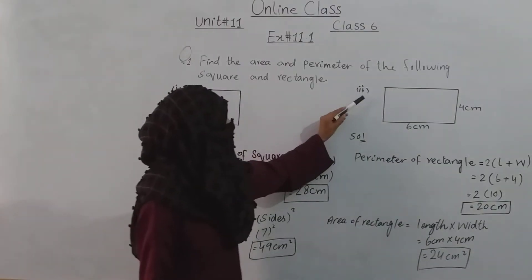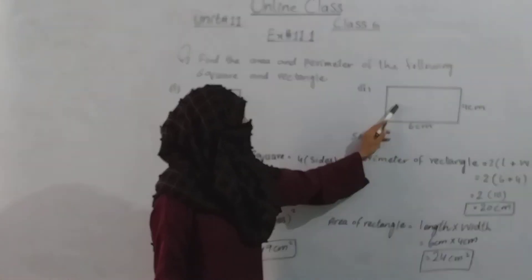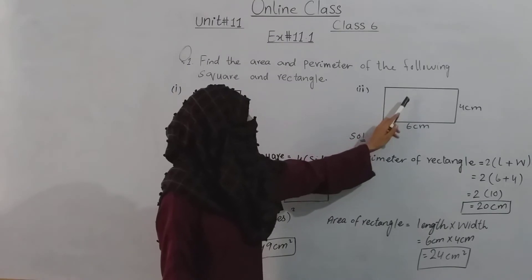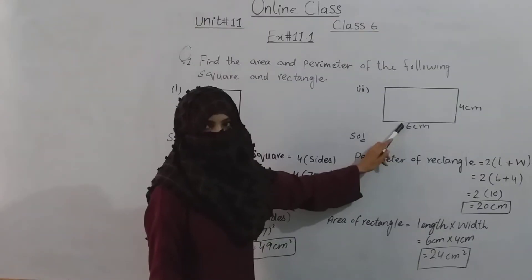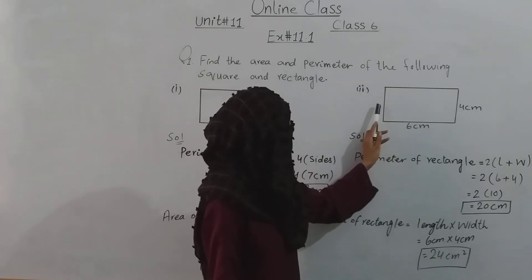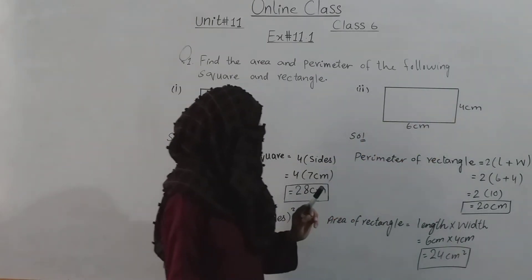Next is the second part. Here we have a rectangle. In a rectangle, the length is equal on two sides and the width is equal on the other two sides.